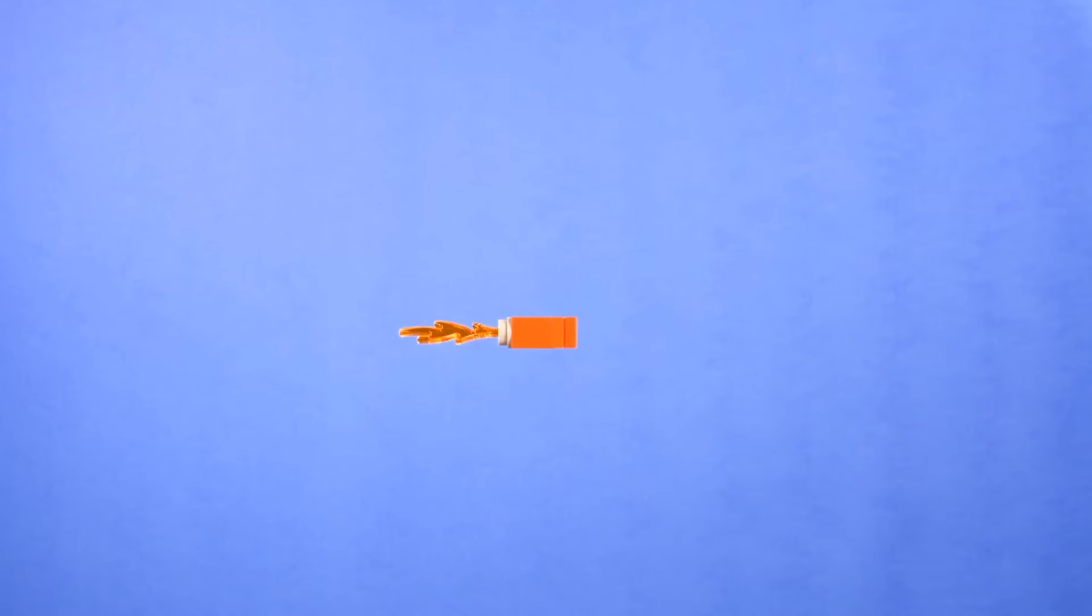Generally, I avoid shooting loops that are this simple because of how painfully obvious it is that it's a looped segment. Part of the magic of animation loops is being able to hide from the audience that you are looping at all, and that requires a little more complexity.